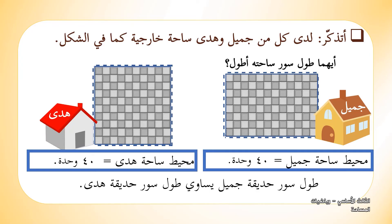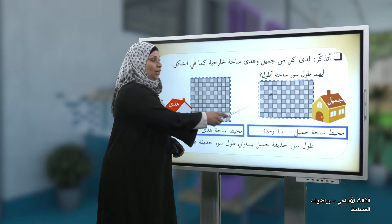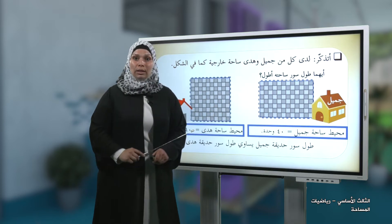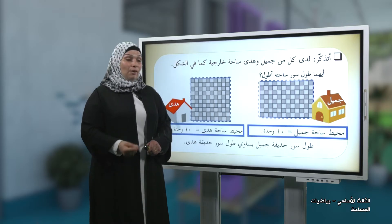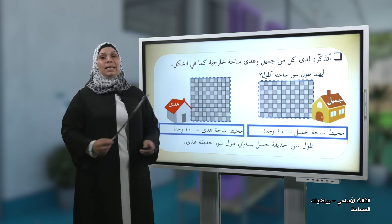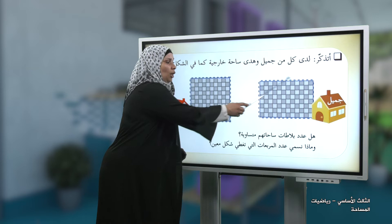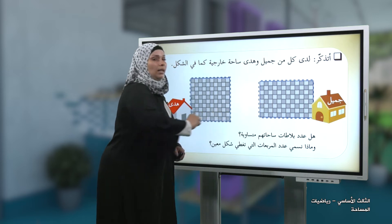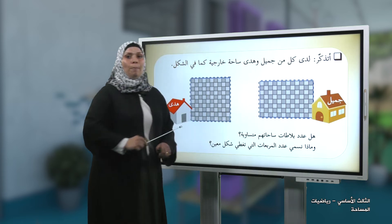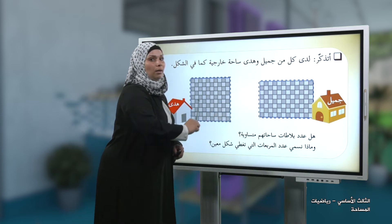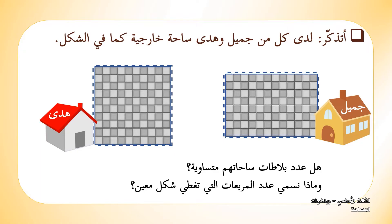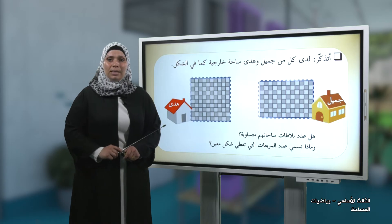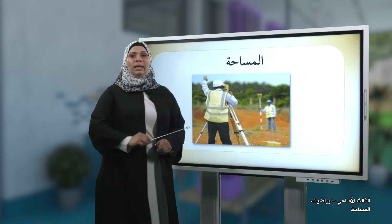نلاحظ أن طول سور حديقة جميل يساوي طول سور حديقة هدى، مع أن ساحة جميل سورها شكل مستطيل وسور حديقة هدى شكل مربع. نفس الطول ولهما نفس المحيط مع اختلاف الأشكال. لاحظوا أن كل حديقة مبلطة ببلاط مربع الشكل - لو قمنا بعد هذه البلاطات، ماذا نسمي العدد الذي سنحصل عليه؟ هذا ما سنتعرف عليه في لقاء اليوم وهو بعنوان: المساحة.